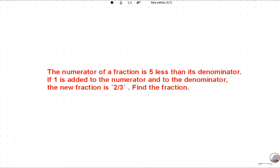Subscribe this channel. Let's read this question: The numerator of a fraction is 5 less than its denominator. If 1 is added to the numerator and to the denominator, the new fraction is 2/3. Find the fraction.